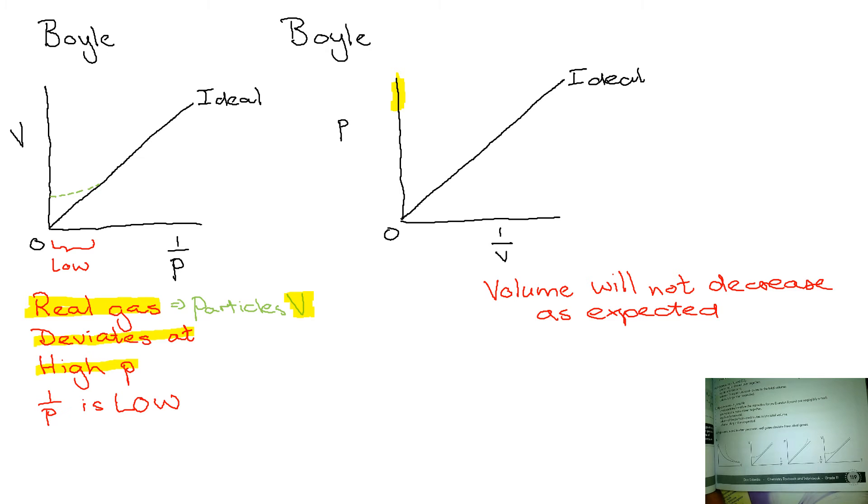So what will happen to 1 over volume? 1 over volume is bigger than what it is. What must happen to 1 over volume? It will not increase as expected. So the deviation on this graph is at very high pressures. The 1 over volume will not increase as expected. So it's less than what we expect it to be. So the graph goes up as the broken line indicates there.